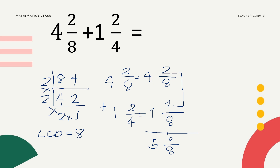Is 5 and 6/8 the final answer? Not yet, because 6 and 8 can be reduced to lowest terms. Think of a number — or the GCF — that can divide both 6 and 8. We can divide both by 2: 6 divided by 2 is 3, and 8 divided by 2 is 4. Copy the whole number. So the final answer is 5 and 3/4.